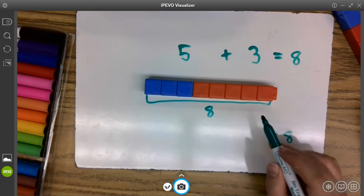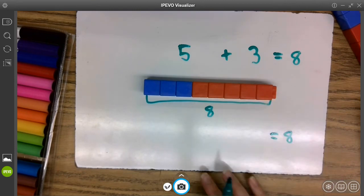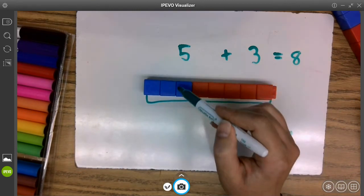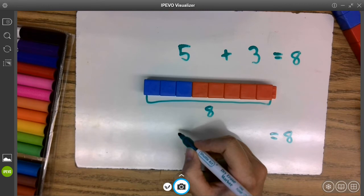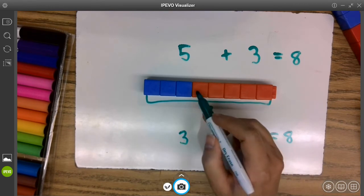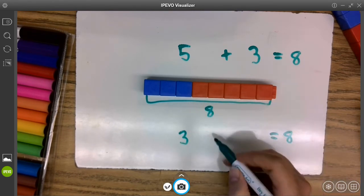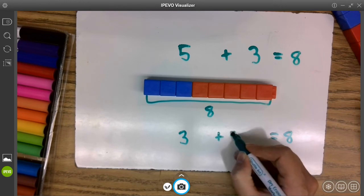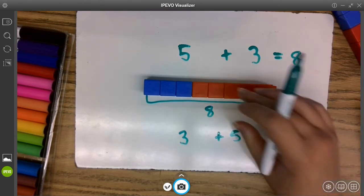But I can see my pieces are now different. Instead of starting with five, I have started with three. And I joined onto it a group of five. Three plus five equals eight.